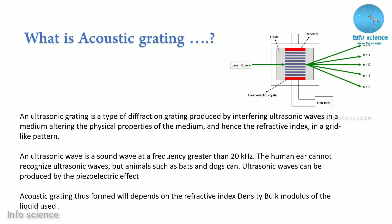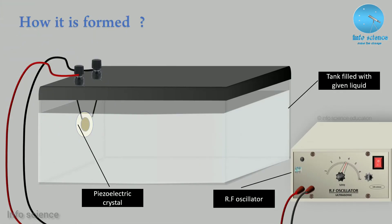Now we are looking at how ultrasonic waves are formed. We are using a glass tank with a piece of piezoelectric crystal and an RF oscillator connection. We have to set the RF oscillator at 4 MHz. In this 4 MHz setup, the piece of crystal has a natural frequency and we have to adjust to that natural frequency so that the ultrasonic sound waves are correct. We will tune the range from 4 to 4.3 MHz.